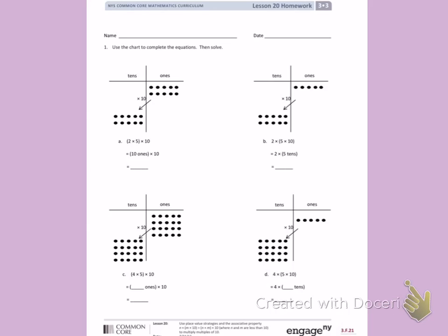so that's being represented as 10 ones times 10. 10 times 10 is counting by 10 ten times, so I can count 10, 20, 30, 40, 50, 60, 70, 80, 90, 100.